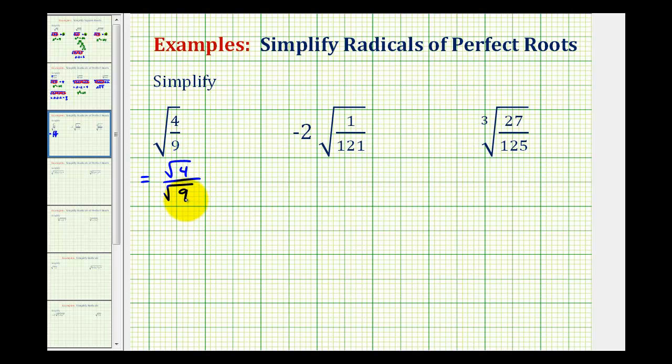And since both 4 and 9 are perfect squares, this will simplify perfectly. To show this, we could rewrite the square root of 4 as the square root of 2 times 2.